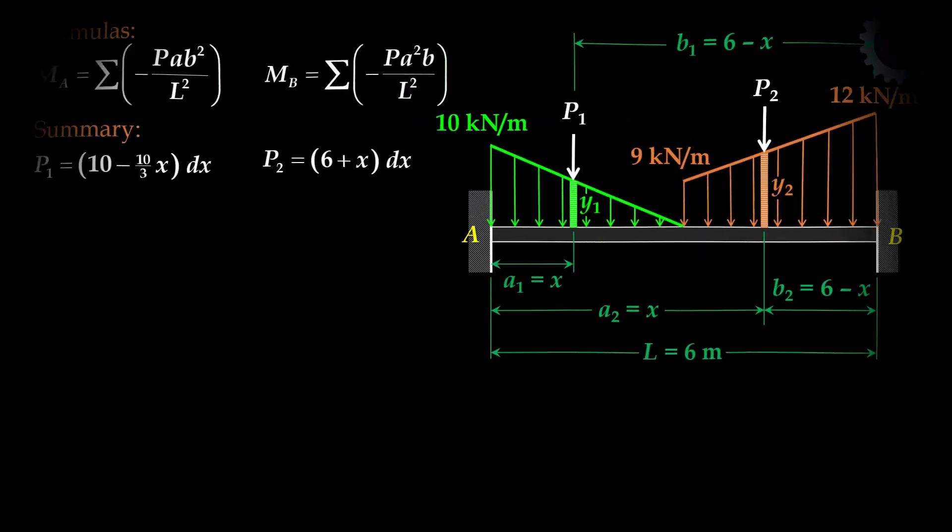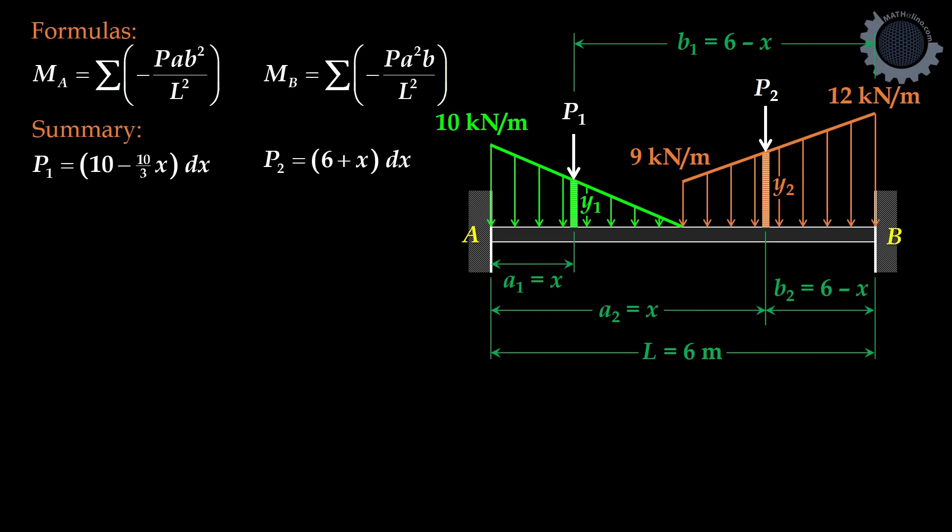Here is our summary. P1 is equal to 10 minus 10 over 3 of X DX, and P2 is equal to 6 plus X DX. Now let us solve for the end moments MA and MB.